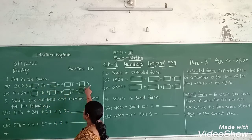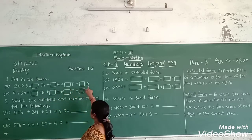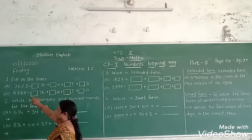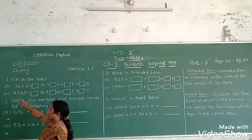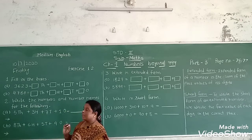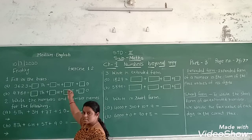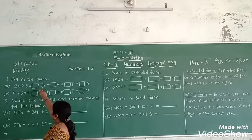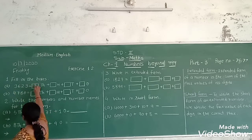Here are some boxes: thousand, hundred, tens, and ones. And here write the number. Three thousand, six hundred, twenty-three. We find out the thousand number, hundred number, tens number, and ones number, then write in these boxes. First, the thousand box: the number in the thousand place is three, so we write three.